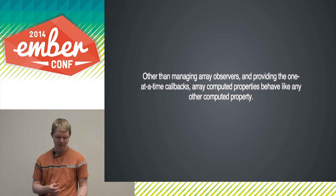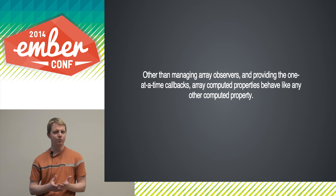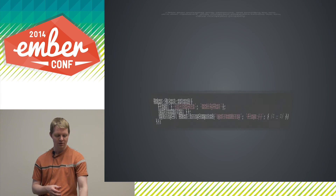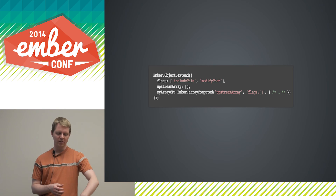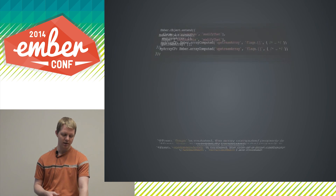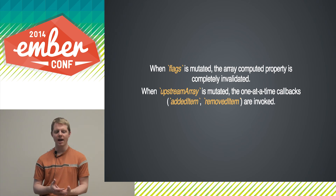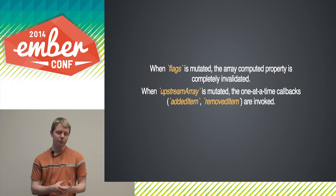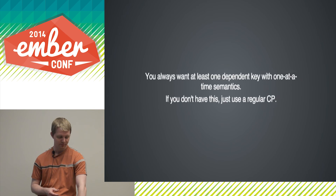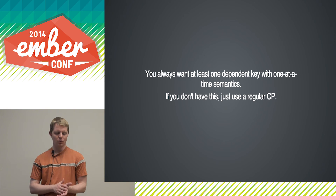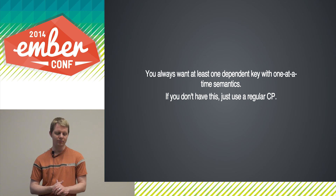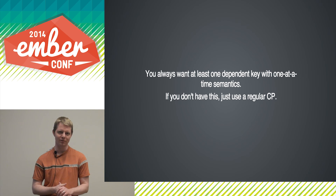The thing to remember is that other than managing array observers, array computed properties are just like other computed properties. So we can just use brackety-bracket `[]`. When we say this array computed depends on upstream but depends on flags.[], that means flags — when an item is added or removed — will completely invalidate the property, and the upstream array will use the addedItem and removedItem callbacks. As a rule of thumb, you always want at least one dependent key with one-at-a-time semantics. If you don't have this, you should just be using a regular computed property.